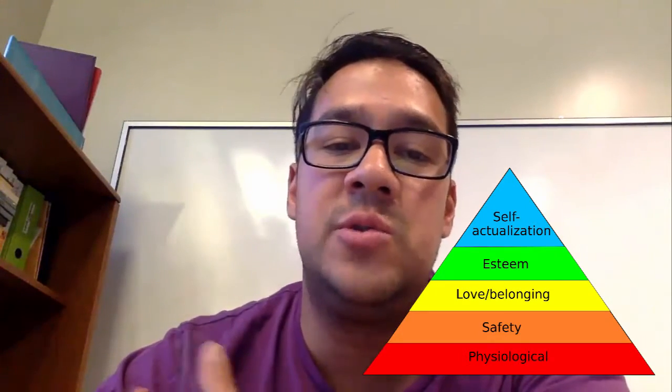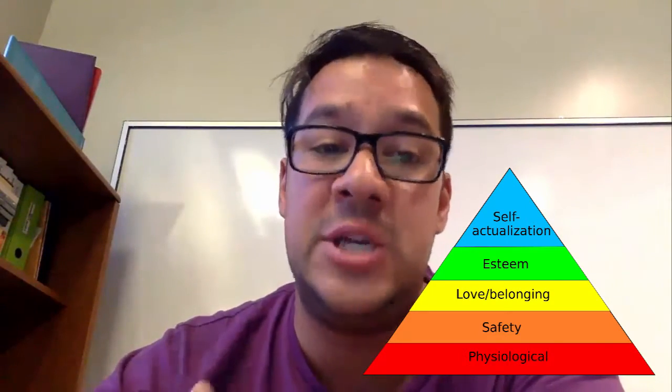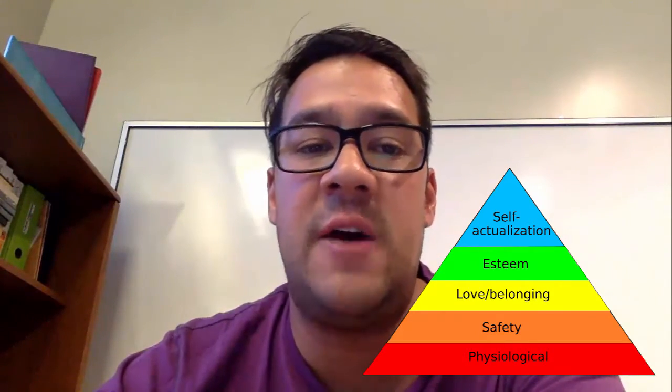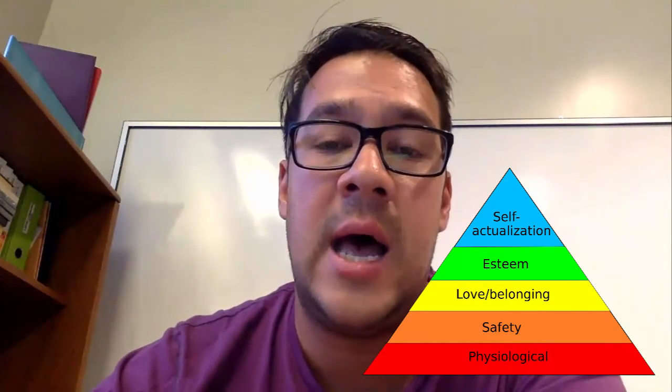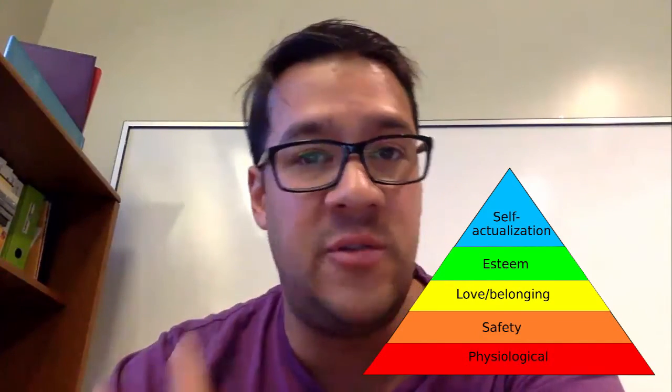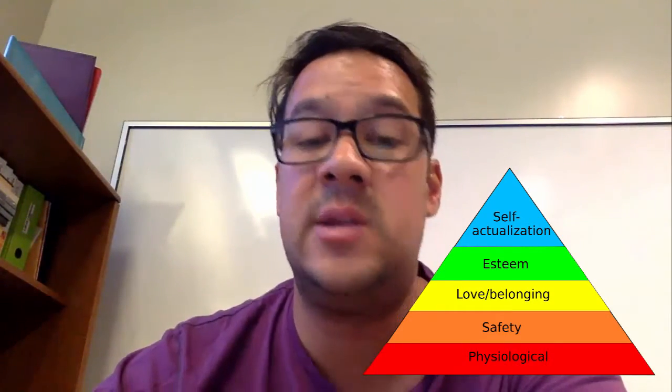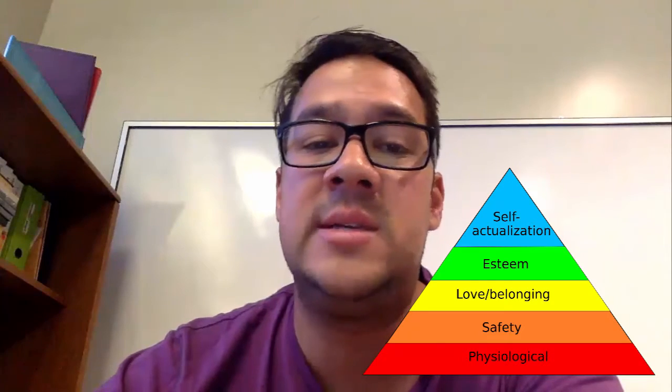Stage three is when we transition from survive to thrive. It is about connection, love, and belonging. We can only truly get to this stage once stages one and two have been satisfied. Friendship, family, and intimacy become incredibly important. Human beings require connection and belonging. This is why children with abusive parents or a child being bullied at school can struggle with this stage, because the two places where a child should have comfort are at home and at school.